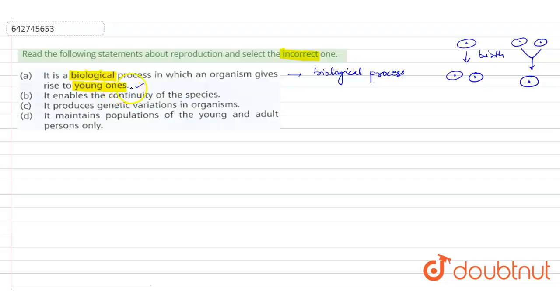Let's see the second one: It enables the continuity of the species. Exactly, yes. Because, for example, in humans, if two humans reproduce, male and female, let's say it gave rise to a male. So what will this do? This will enable the continuity of the species. If this male and female will die out, this male will continue the species. So this is also correct.